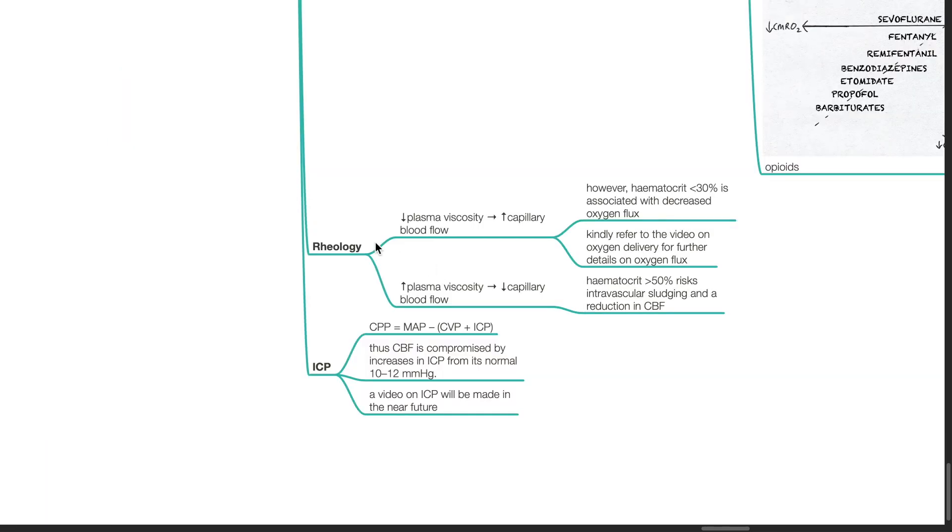Rheology. When plasma viscosity decreases, there is increase in blood flow. However, hematocrit of less than 30% is associated with decreased oxygen flux. Kindly refer to the video on oxygen delivery for further details. When plasma viscosity increases, there is decreased capillary blood flow. When hematocrit is more than 50%, there is risk of intravascular sludging and reduction in CBF.